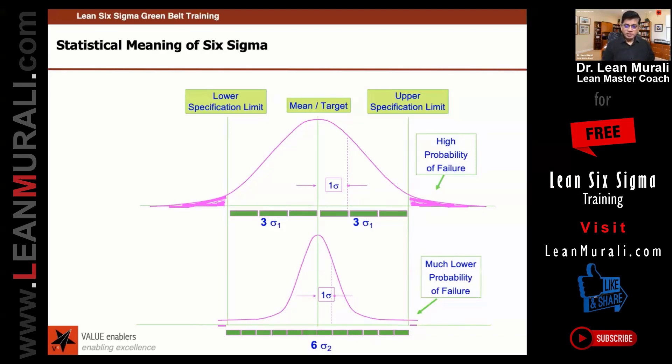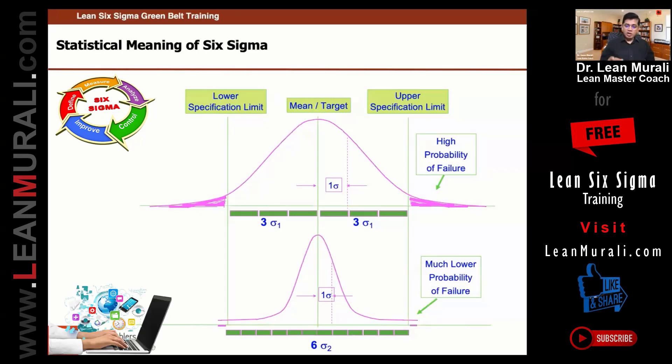But in 6 sigma, we are not going to use technology or new machines to reduce variations. We are going to identify causes, eliminate those causes and reduce these variations. Thank you.